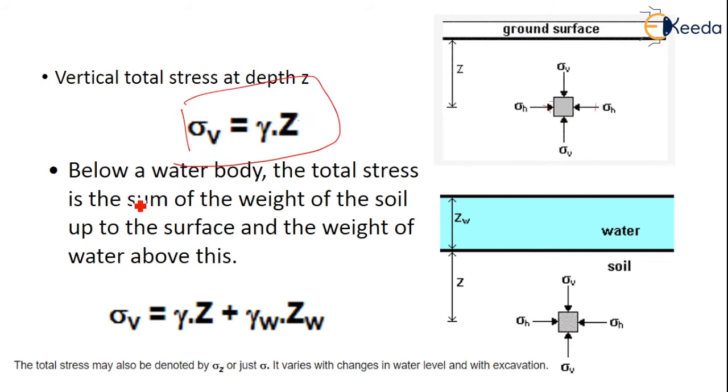Below a water body the total stress is nothing but if there is a water body, it is nothing but the sum of the weight of the soil up to the surface and the weight of the water above this. So soil plus water. Vertical stress is equal to gamma Z plus gamma W into Z W. The total stress may also be denoted by sigma Z or just sigma only. It varies with the changes in the water level and also with the excavations.